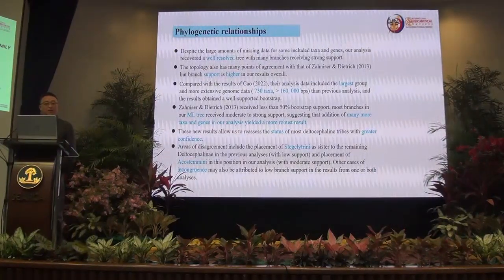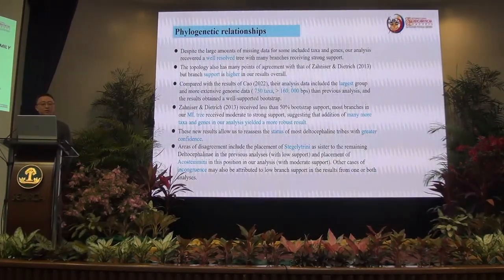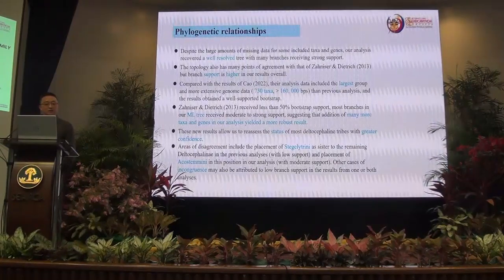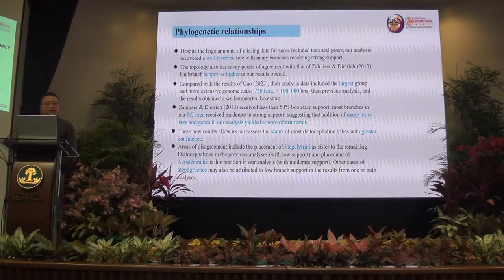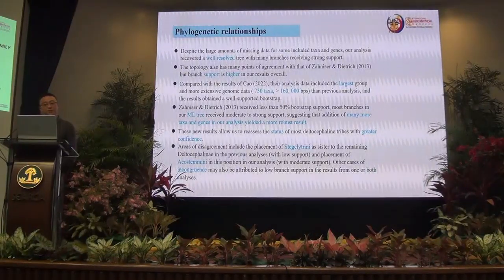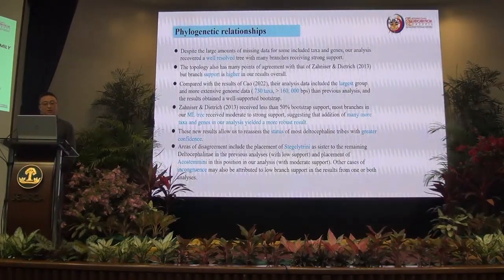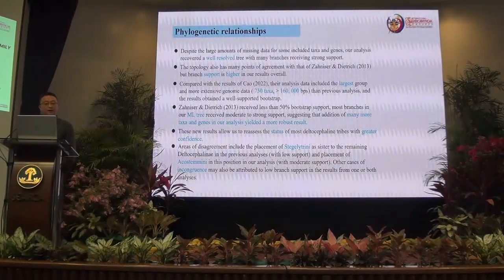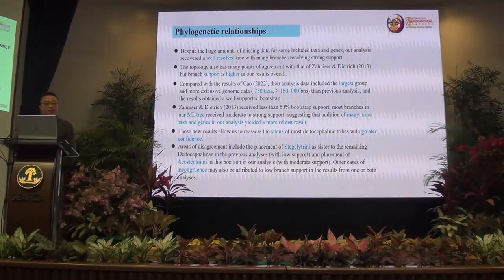Branch support is higher in our results. Another analysis in 2013 received less than 15% bootstrap support. Most branches in our ML tree received moderate to strong support, suggesting that additional taxa and more taxa and genera in our analysis yield a more robust result. This new result allowed us to reassess the state of most Deltocephalinae tribes with greater confidence.